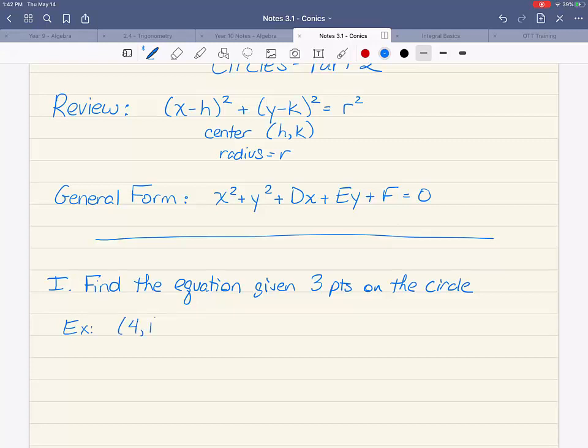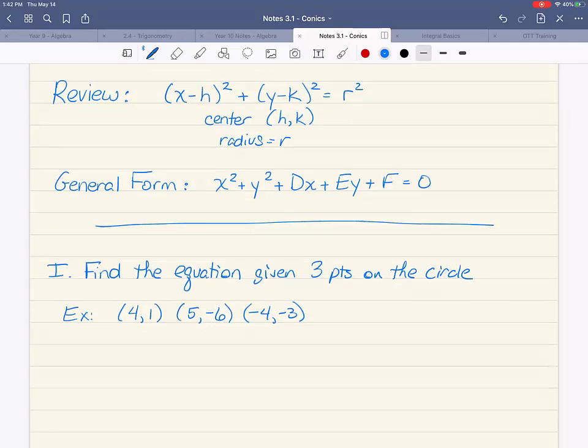So our first example is going to give these three points: the point four comma one, the point five comma negative six, and the point negative four comma negative three. Now all of these points are on the outside of the circle. If you know the center, all you need is one other point to find the equation. But if you don't know the center, you need three points.